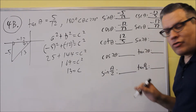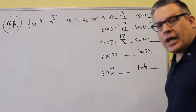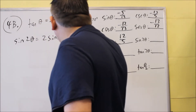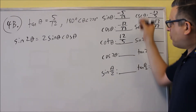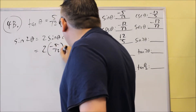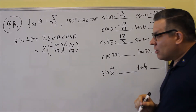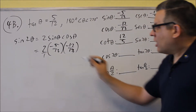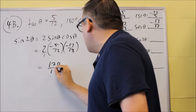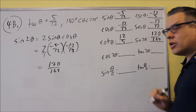Now we're ready to fill out the rest of this information with the double angles and half angles. We're ready to use the formulas. So we want to do sine 2θ. Sine 2θ is equal to 2 sine θ cosine θ — that's our formula. We're going to put in our values for sine and cosine: 2 times negative 5 thirteenths times negative 12 thirteenths. Multiplying across the top you get positive 120, and the bottom 169. So sine 2θ = 120 over 169.